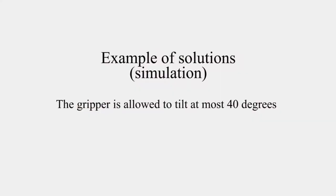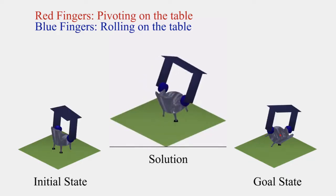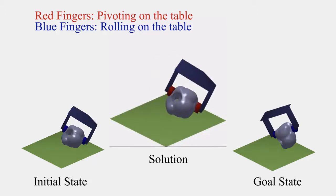By analyzing the mechanics of the two motion primitives, we are able to design a computationally efficient planning algorithm that can solve a large range of reorienting problems by alternating between the two motion primitives.